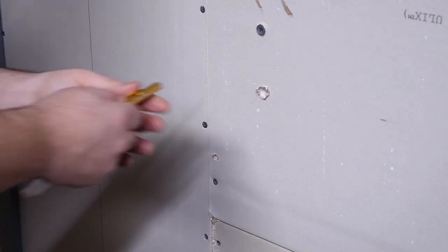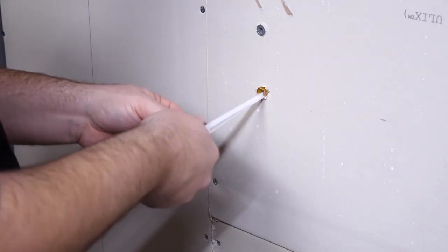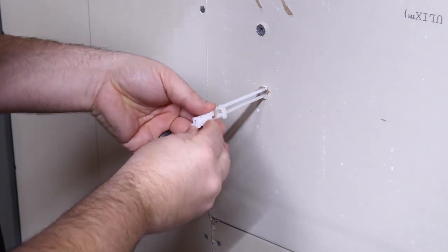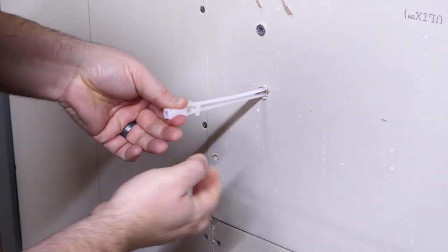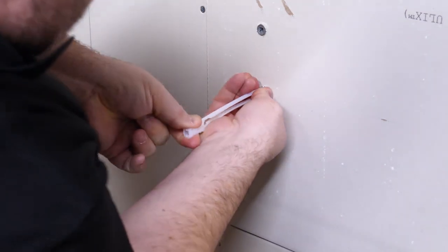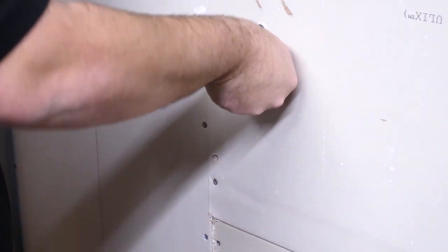Once the hole is drilled, bend the snap toggle so you can slide the metal part into the wall and pull it tight. Then we can slide this ring down towards the drywall. We want to make sure that the two ends are even, otherwise we'll have challenges in the future. Then we flex the plastic up and down until it snaps off. That's why they call it a snap toggle.